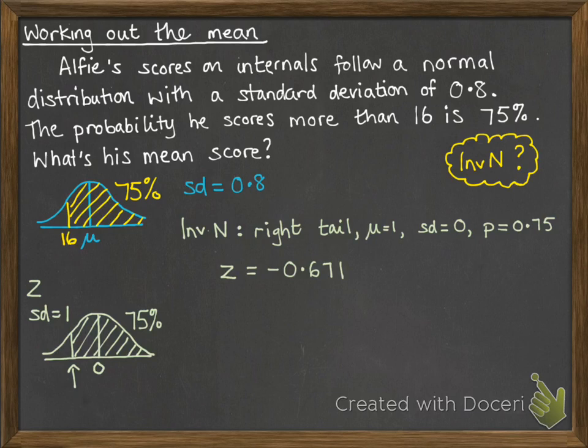OK, so what's next then? Take a look at your tables, and it will tell you that z is equal to x minus μ over σ. So that z value will be the x number we were looking up, subtract the mean, divide it by σ. So on our original distribution, x was 16, the mean we don't know, that's what we're trying to work out, and the standard deviation was 0.8. And that will be equal to this z value we just looked up of minus 0.671.